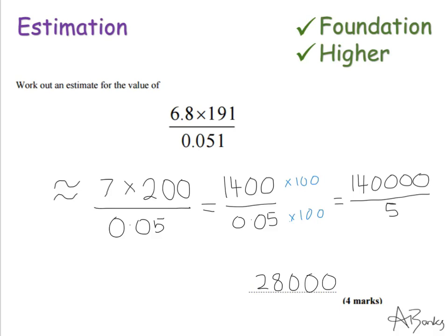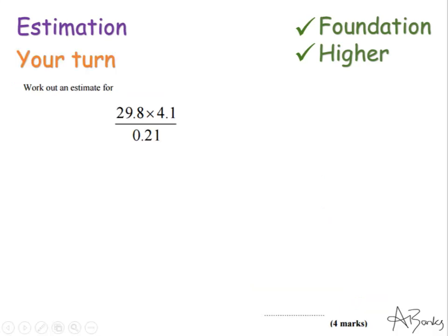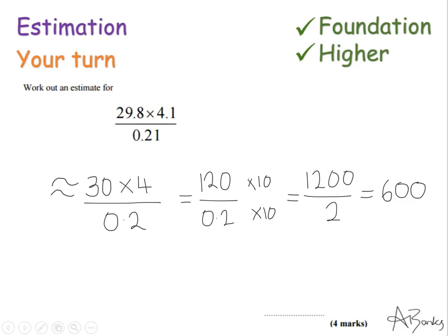That's my answer of 28,000, and that is a 4-mark question. Here's one for you to try — pause the video and then unpause when you're ready to see the worked solution. Here's the solution you should have got. You might have done something slightly different at this stage; you might have been able to work it out straight away. I chose to multiply the top and bottom of my fraction by 10 so that it was an easy calculation. But the final answer is 600 — so you should have got this one.